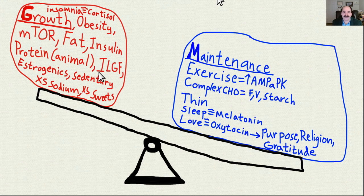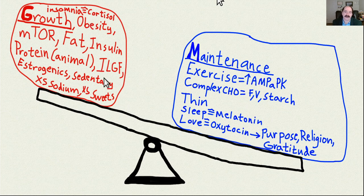Whenever you have insulin resistance — caused by dietary fat, animal protein, excess dietary sodium, excess stress, insomnia, or caffeine — those all lead to insulin resistance, increased insulin, and increased insulin-like growth factor. Insulin-like growth factor and insulin both activate mTOR. mTOR then increases cell growth and cell proliferation.